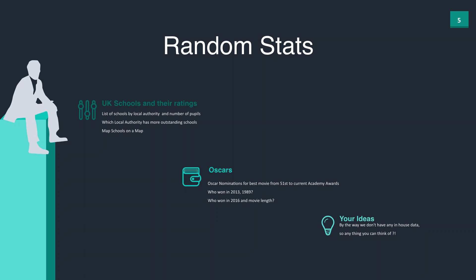He also wants an Oscars information dashboard — there's no relationship between these two datasets. For the Oscars, he wants all the best movie nominations from the Academy Awards from the 51st to the current one, who won in a specific year, movie runtime, and things like that. This is a Random Stats organization, which is why they want all this random stuff. He also says we don't have any data in-house — no UK schools data and no Oscars information.